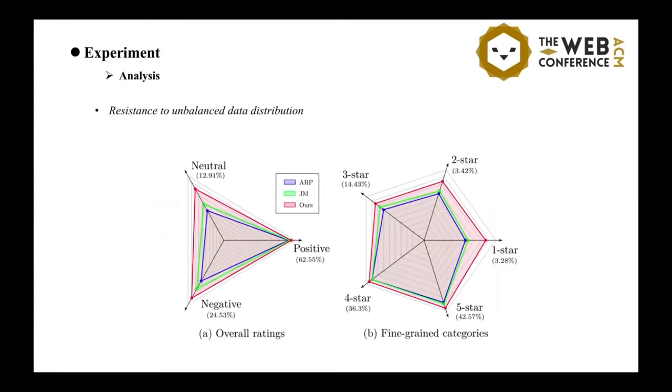Next, we perform some analysis for presenting some in-depth discussion and insights. We first evaluate the resistance to the unbalanced data distribution. Please note that the datasets contain very imbalanced class distribution. For example, more positive labels and less negative labels. Here we evaluate this attribution.